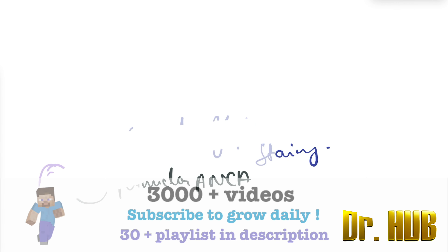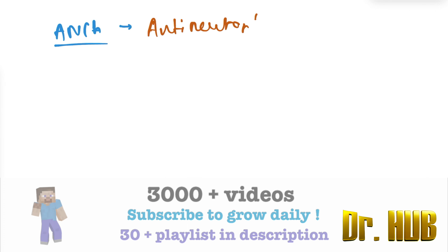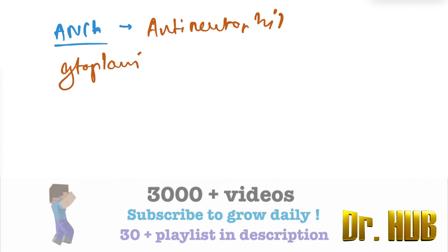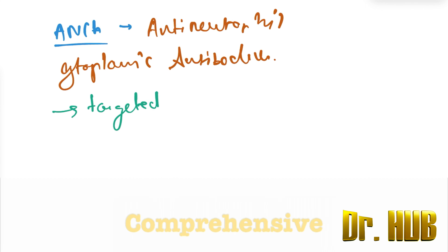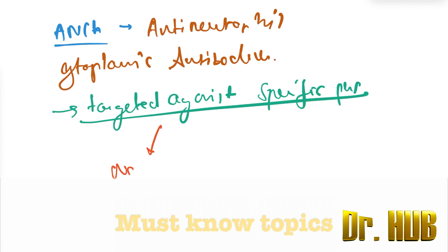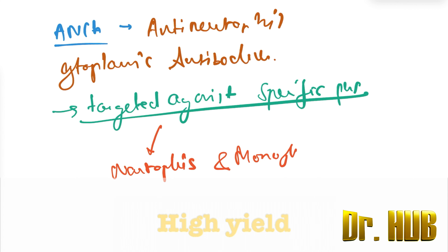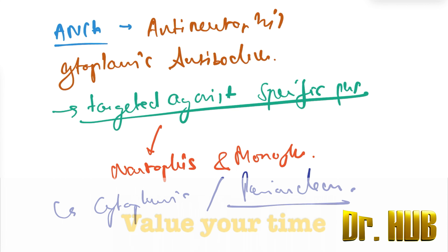To begin with, we need to know what ANCA are. ANCA stands for antineutrophil cytoplasmic antibodies. They are antibodies targeted against specific proteins present in neutrophils and monocytes. They are further classified into cytoplasmic ANCA (C-ANCA) and perinuclear ANCA (P-ANCA).